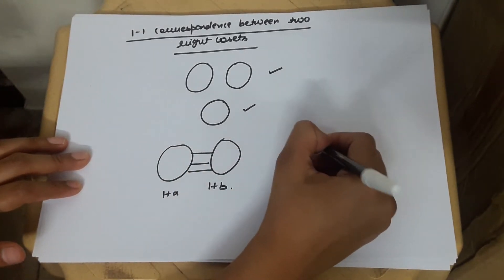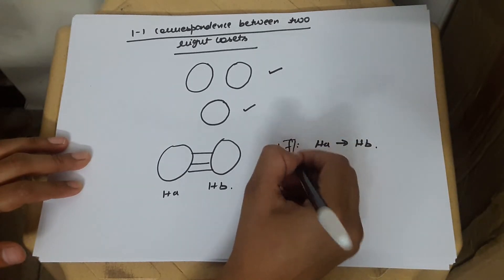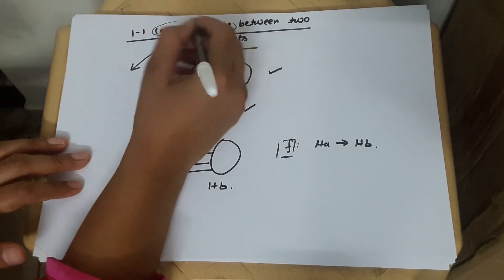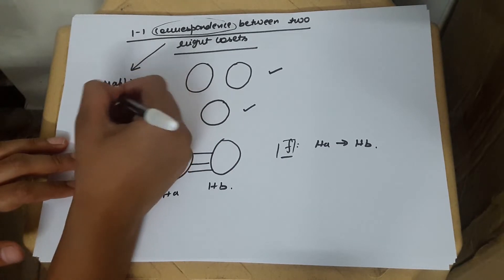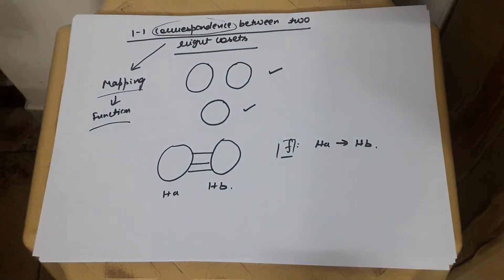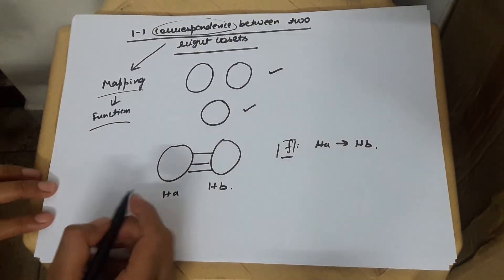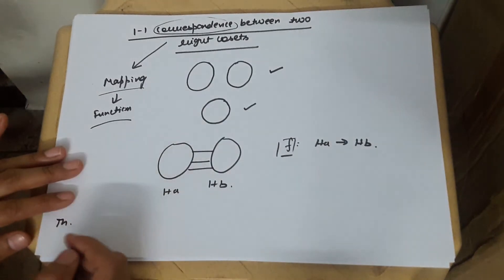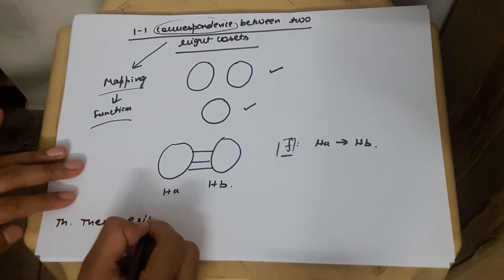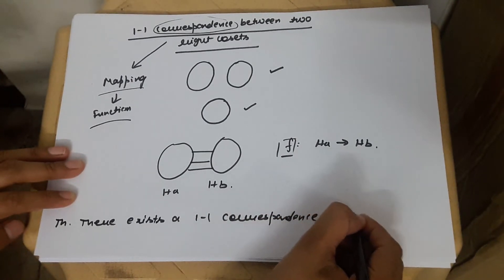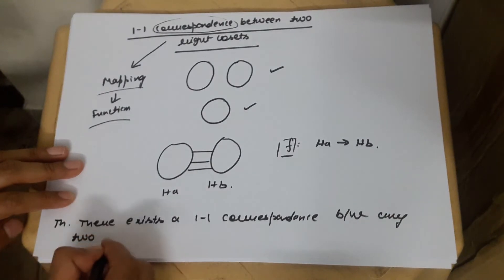There exists a mapping f from Ha to Hb such that f is both one-one and onto. The word 'correspondence' is essentially the same as the word 'mapping' or 'function' — I can use any of these terms interchangeably. So, the theorem we are going to prove states: there exists a one-to-one correspondence between any two right cosets.